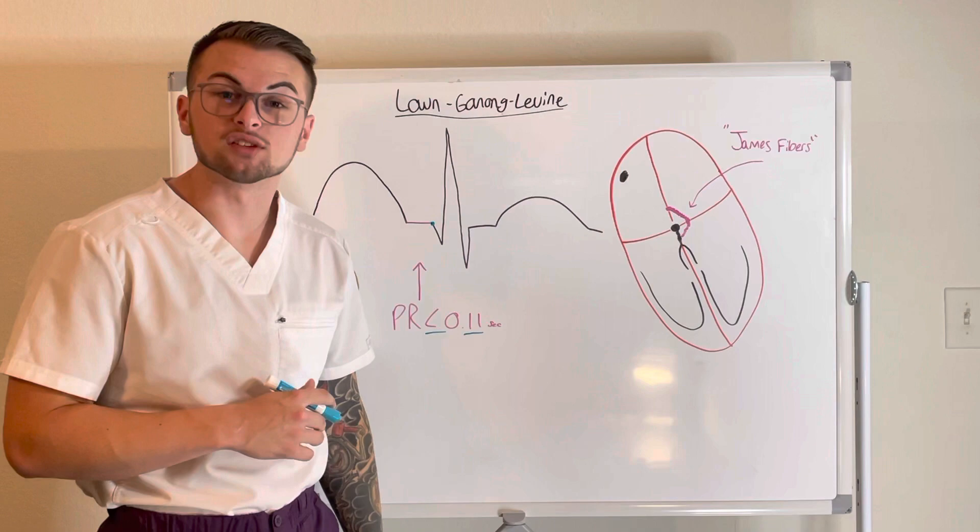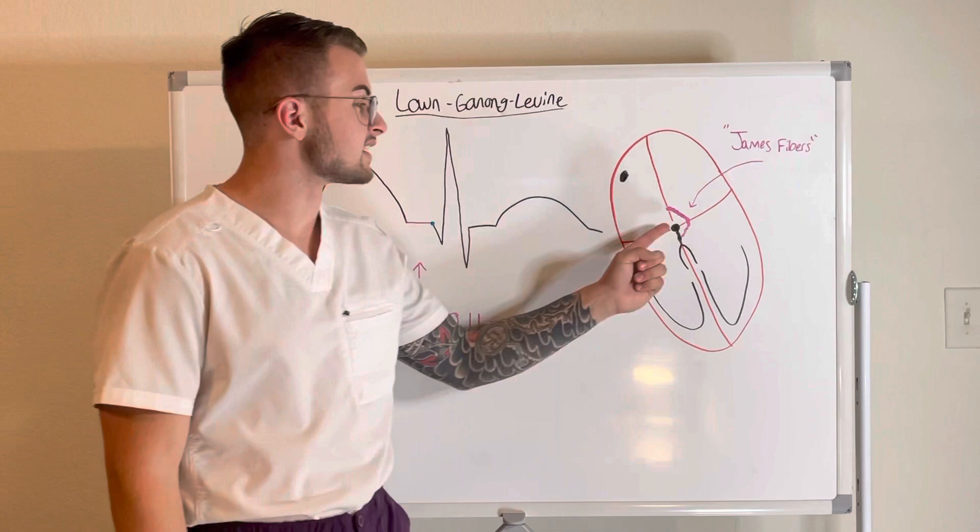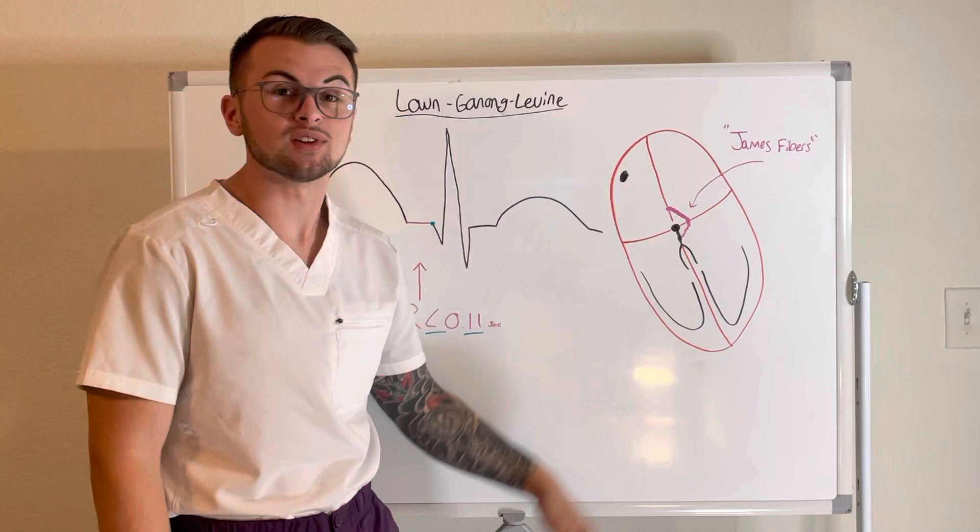Let's say that we have a patient with Lam Ganong Levine syndrome, or LGL syndrome. This is a benign condition characterized by an accessory tract — an extra tract of fibers — that bypasses the AV node.